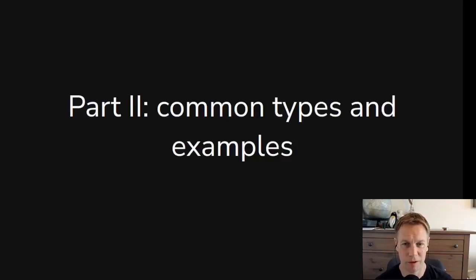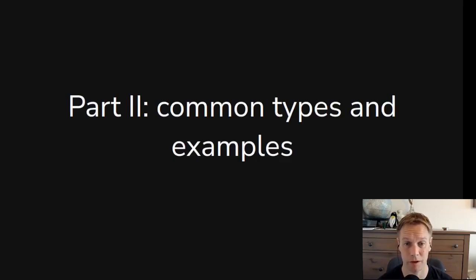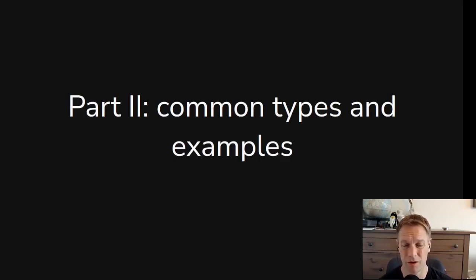Hi, welcome back to Rust 101. This is video 45. I'm Andy and we are continuing to talk about unsafe stuff. Some of this stuff is outside of my comfort zone, but I haven't been doing my research, so hopefully I don't have useful things to say. This time we're going to look at some examples of unsafe code you might come across or might need to write yourself.